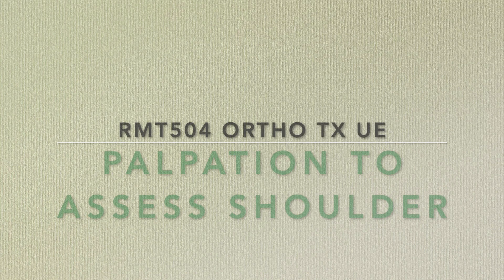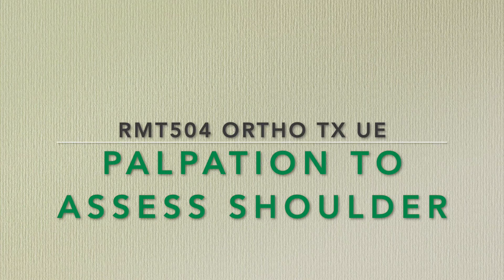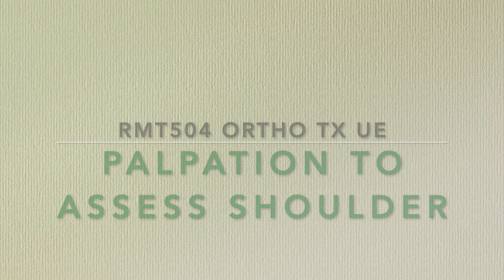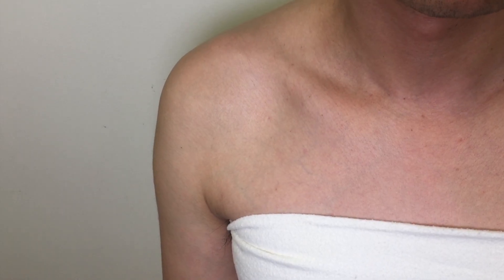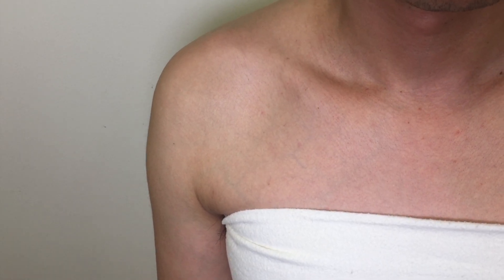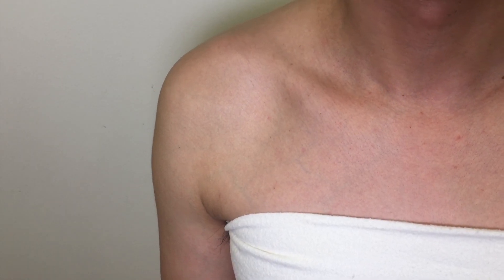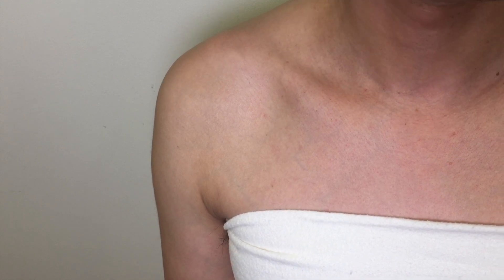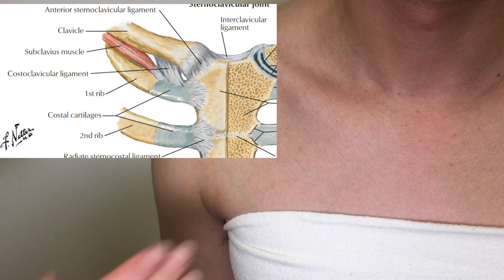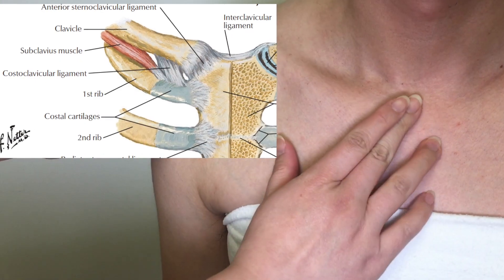This is a video demo showing how to assess the anatomical structures on anterior and posterior aspects around the shoulder region by palpation. The demo is on the right shoulder. Let's start from the sternoclavicular joint.